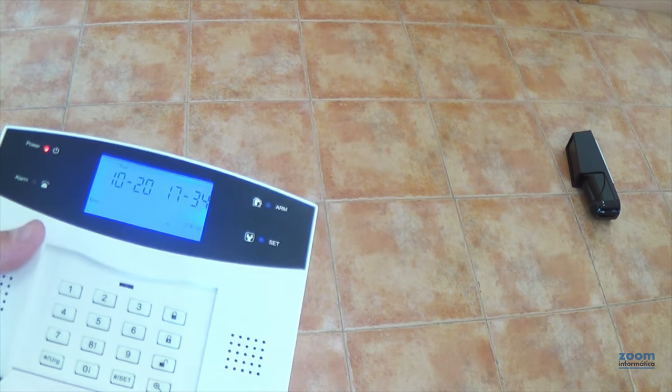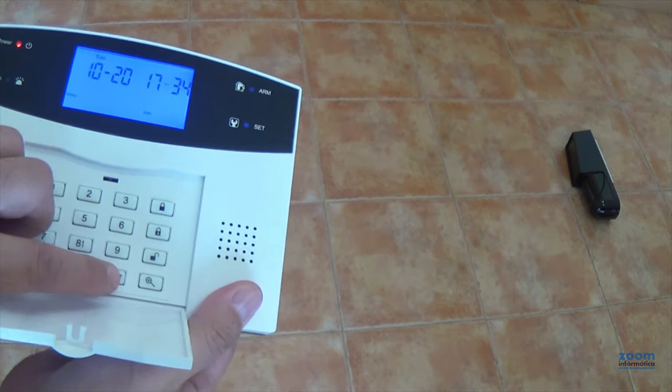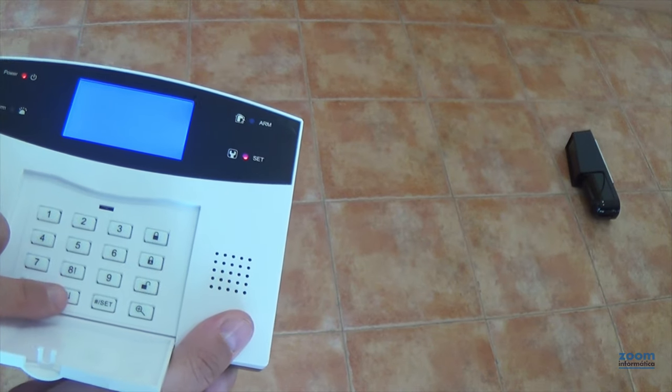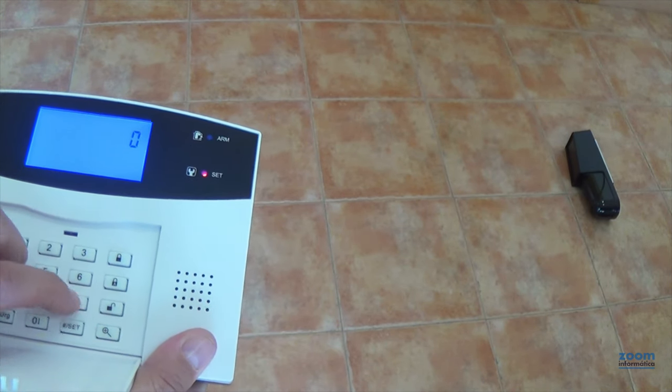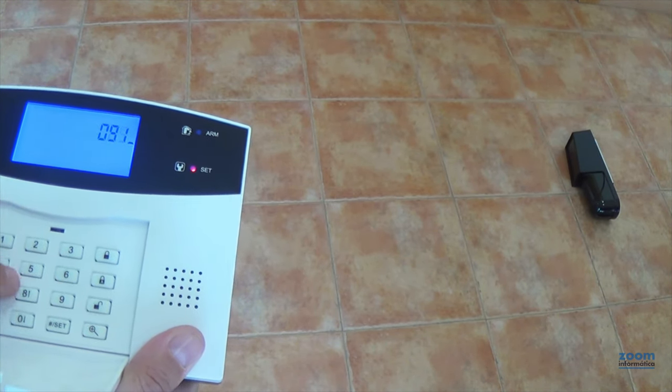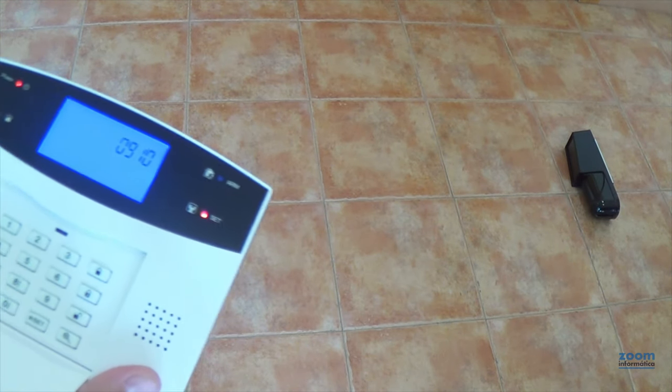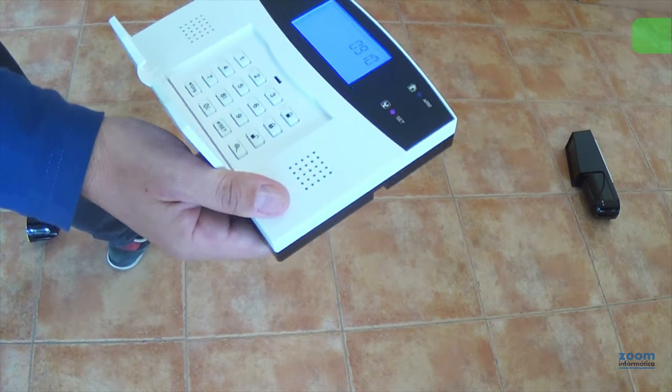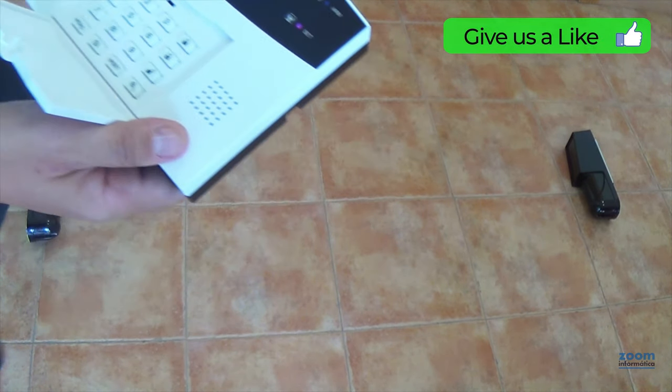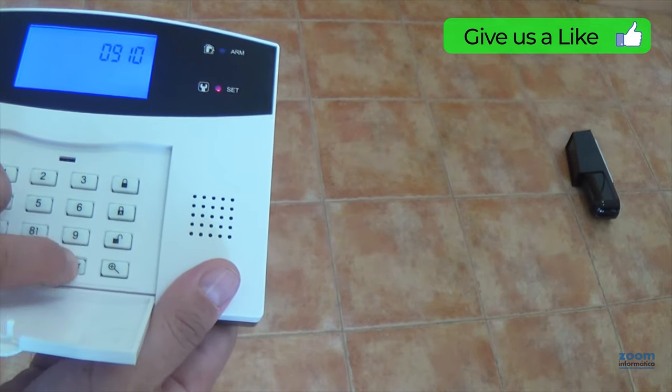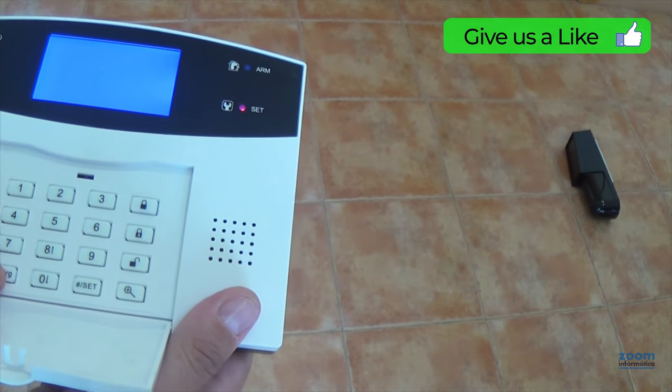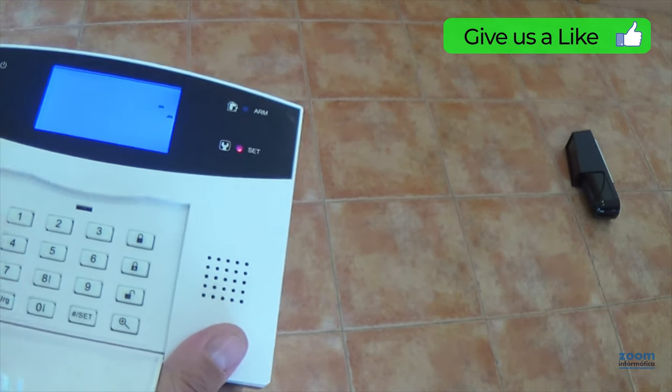Take your host alarm and activate the program mode to be able to detect it. Passing in front of the beams will activate the alarm and the host will recognize it, so that the beam can detect when you pass between them.